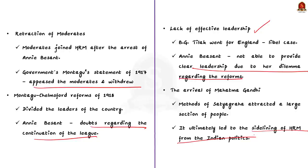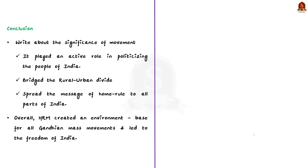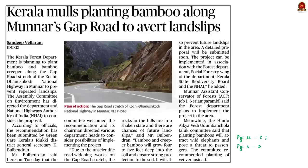With the conclusion, this question will be complete. In the conclusion, you can write about the significance of the movement — like how it played an active role in politicizing the people of India, bridged the rural-urban divide, and spread the message of Home Rule to all parts of India. Overall, the Home Rule Movement created an environment that was the base for all Gandhian mass movements, which ultimately led to freedom. If you can write an even better answer, post it in the comment section so your peers gain another perspective.